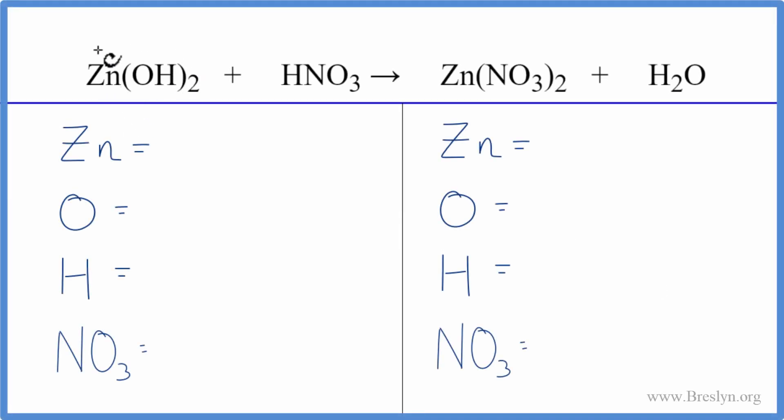In this neutralization reaction, we have zinc hydroxide plus nitric acid. They combine to give us the salt, the zinc nitrate, plus water. So let's balance the equation, and we'll use a bit of a trick to help us along.